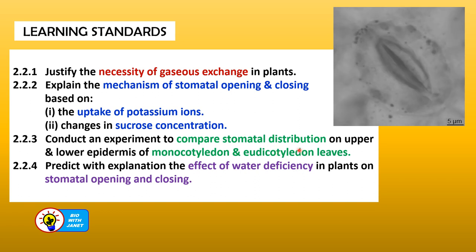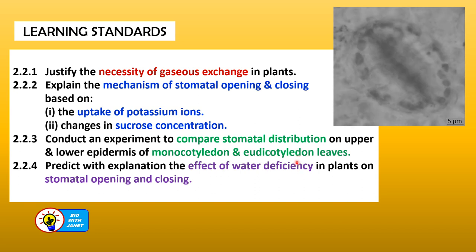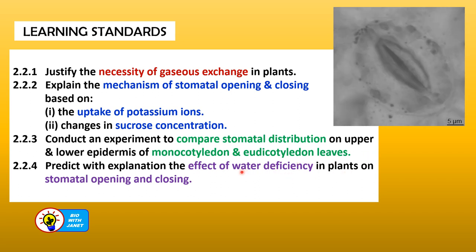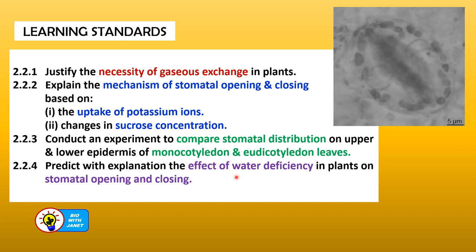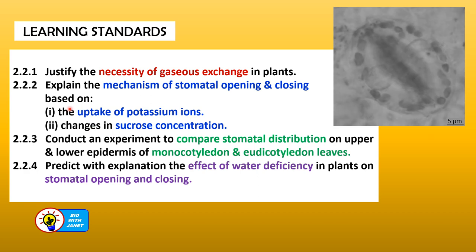Thirdly, we should be able to conduct and explain an experiment to compare stomatal distribution on the upper and lower epidermis of monocotyledon and eudicotyledon leaves — this experiment will be discussed in another video. Fourthly, we should be able to predict with explanations the effect of water deficiency or a lack of water in plants on the opening and closing of the stoma.